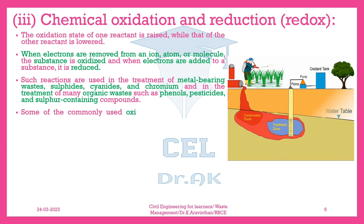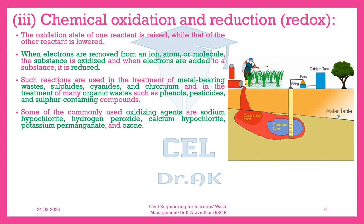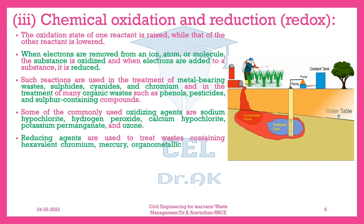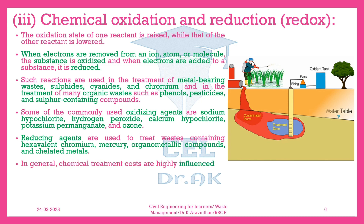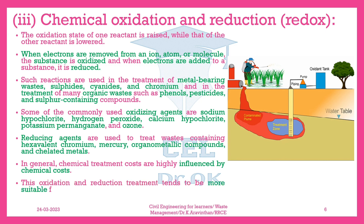Some of the commonly used oxidizing agents are sodium hypochlorite, hydrogen peroxide, calcium hypochlorite, potassium permanganate, and ozone. Reducing agents are used to treat wastes containing hexavalent chromium, mercury, organometallic compounds, and chelated metals. In general, chemical treatment costs are highly influenced by chemical costs. This oxidation and reduction treatment tends to be more suitable for low concentration, less than 1%, wastes.